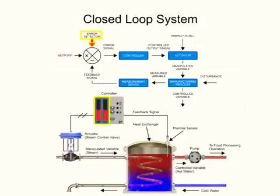Error detector compares the set point to the feedback signal and produces an output proportional to the difference between them. Error signal is the output of the error detector. If the feedback signal and set point are equal, the error signal is zero.